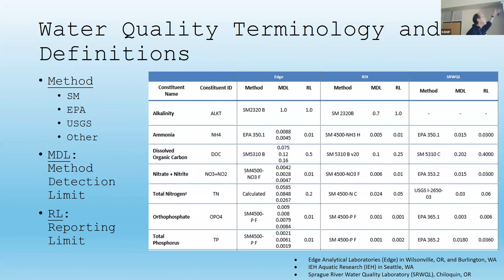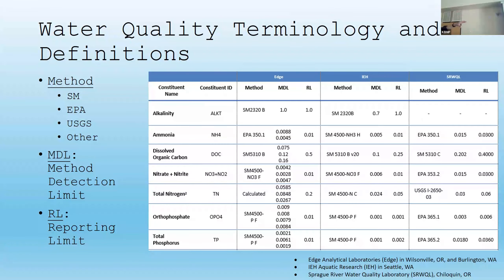You'll notice the labs have different method detection limits and different reporting limits — they're not all the same. It's a function of the laboratory, the equipment, and the staff and their training. So it's not fixed everywhere you go, and it can change mid-year. All of this is in the KHSA IM-15 annual reports — you can go back through all of them and find all these reporting limits, method detection limits, when things changed in the middle of the season and other problems that occur.